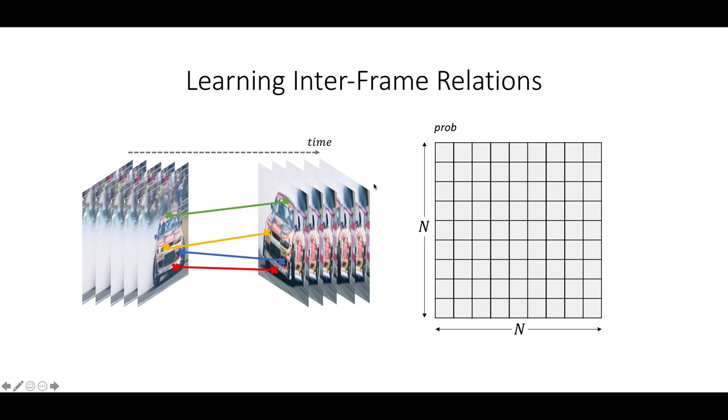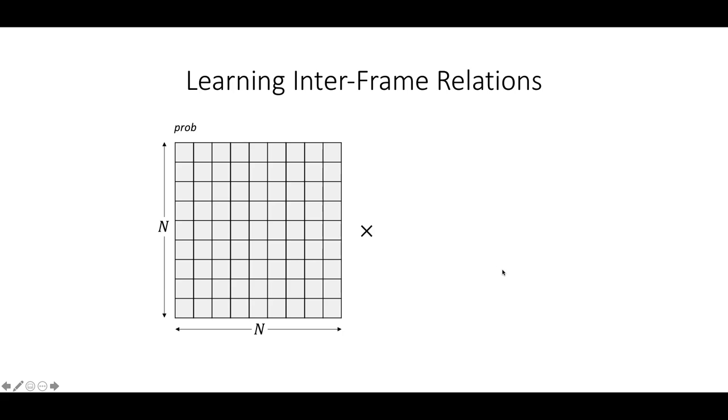In total, we have an N by N matrix that models the dense correspondence in a probabilistic manner between two frames. Basically, it describes the relations of any pair of pixels from two different frames in a video.